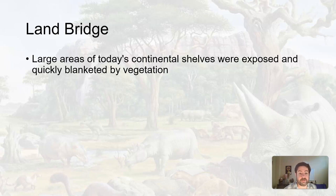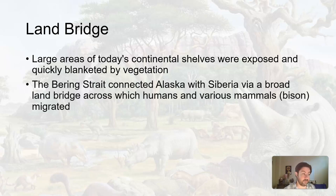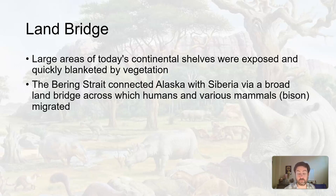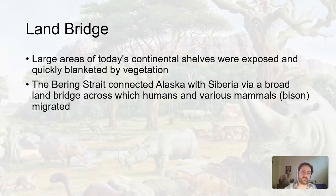Large areas of today's continental shelves were exposed and quickly blanketed by vegetation because there wasn't enough water in the ocean to cover them. The Bering Strait, the area between Alaska and Russia, is a small strip of ocean now. With lower sea levels, the ground was exposed, and so the Bering Strait actually connected Alaska and Siberia with a broad land bridge, which humans and various animals used to migrate into North America. That's how humans got to North America — along this land bridge — because humans evolved out of Africa, spread into Europe, into Asia, and then followed the land bridge into North and South America.